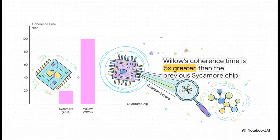And here's where you can really see the difference in black and white. This is coherence time. Basically, how long a qubit can hold on to its fragile quantum state before it all falls apart. Compared to Google's last chip, Sycamore, Willow lasts five times longer. That is a monumental leap in stability and performance.